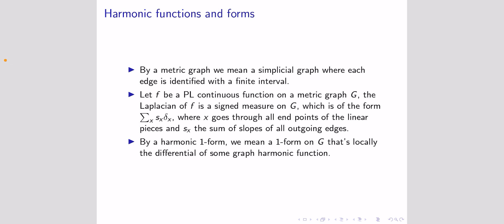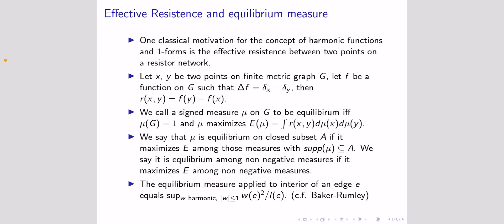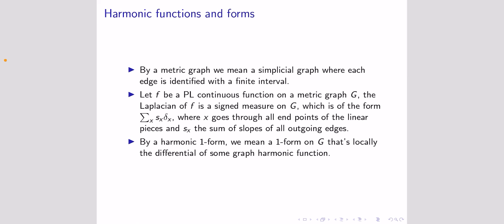Why do we care about graph harmonic functions and graph harmonic one-forms? These definitions date back a long time and arise from graph theory, but they also have many applications in physics, combinatorics, and numerics — for example, as a way of analyzing how good a mesh is. In particular, a classical connection is with Kirchhoff's law of electrical networks: we can think of a graph harmonic function as electrical potential, and a graph harmonic one-form as the electrical currents.